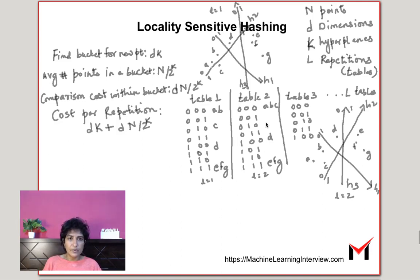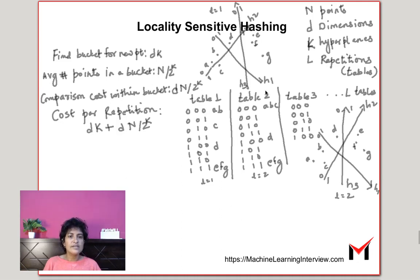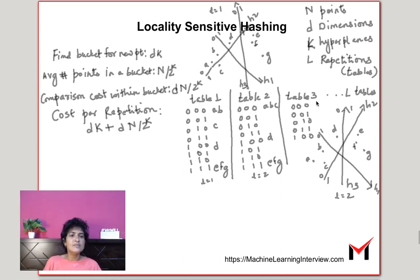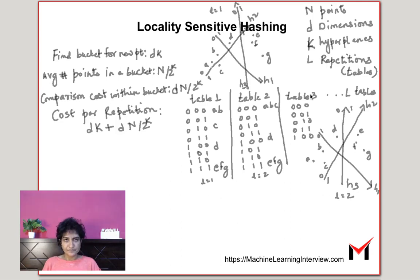If we are given a new data point, we find the hash for it. Suppose the hash turns out to be 0,0,0. To find nearest neighbors, we look in each table. We compute the hash with table 1, giving 0,0,0, and the nearest points are A and B. Then with table 2, it is also 0,0,0 and we find points A, B, and C. With table 3, we might get A, B, C, and D. We then take all the points sharing the same hash in any of the tables and directly compute similarity with them using the dot product to pick the most similar ones. Instead of looking at millions of points, we only examine those sharing a hash value in at least one table.